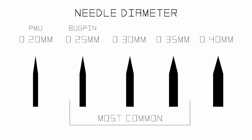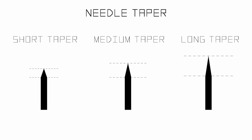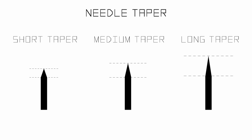Next up is needle taper. The needle taper is the distance from where the needle starts getting narrow to where it ends at the tip. You can find needles with a short, medium, or long taper, which determines the sharpness of your needle. A short to medium taper means the needle will be slightly dull and better for shading and packing, while a long taper means the needle will be thinner and sharper, therefore better for precise lining.